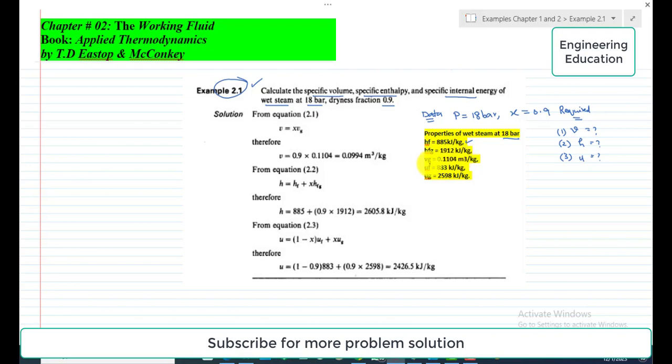And this is specific volume at saturated vapor line, vg = 0.1104 cubic meters per kilogram.